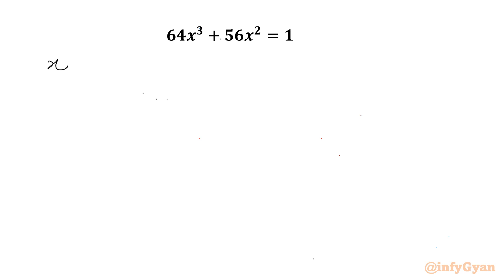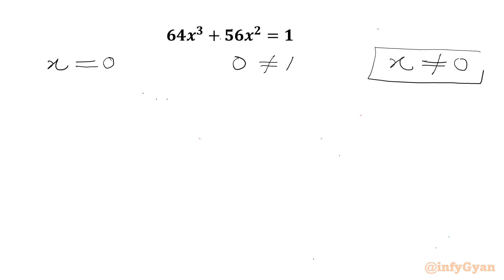I will check our equation at x = 0. So 64 times 0³ plus 56 times 0² — the LHS will be 0, and RHS is 1. Since 0 cannot equal 1, I can conclude x cannot be 0 for our given equation.